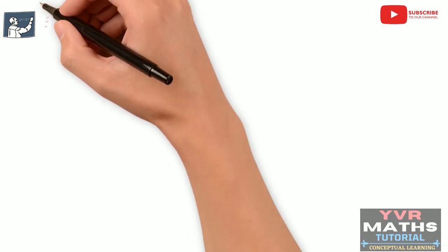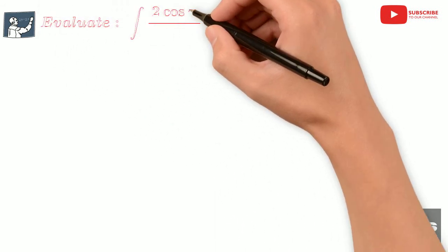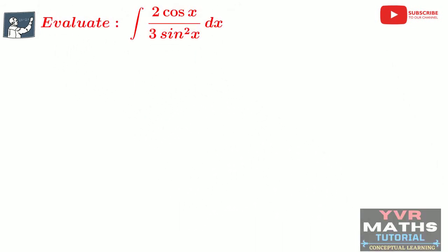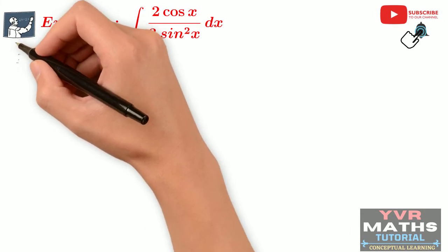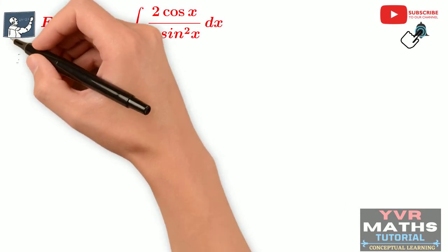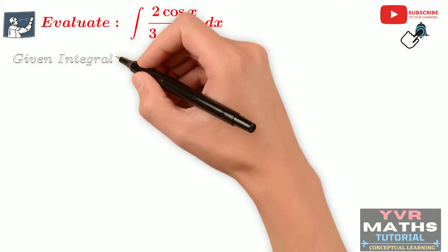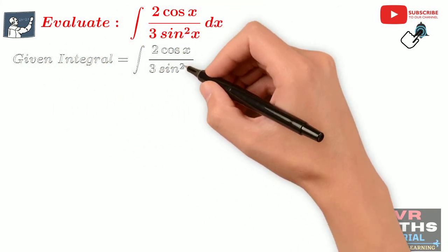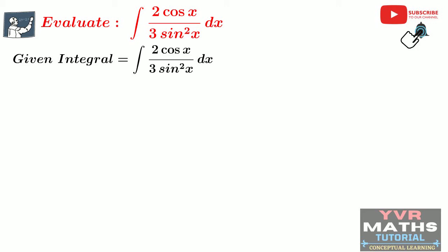First question: Evaluate integral of 2cos x by 3sin²x dx. Given integral is equal to integral 2cos x by 3sin²x dx. In the given integrand, we have a constant term on the numerator 2 and on the denominator 3. So by using basic properties of indefinite integrals, the constant 2 by 3 we can write outside of the integral.